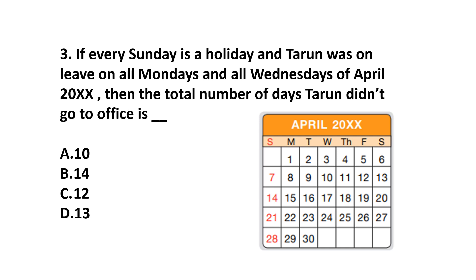Question number 3. If every Sunday is a holiday and Tarun was on leave on all Mondays and all Wednesdays of April 20XX, then the total number of days Tarun didn't go to office is? He didn't go to office on Sundays, Mondays and Wednesdays — that is 4 Sundays plus 5 Mondays plus 4 Wednesdays, which equals 13. Our answer is option D, 13.